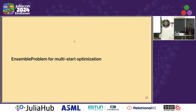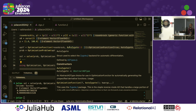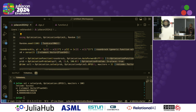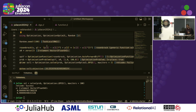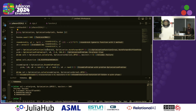We have also added support for ensemble problems. If you are a SciML user, you know ensemble problem is this way of being able to run copies of the same problem using different initializations. For optimization, it would be different initial points. This can be pretty effective in a low-dimensional setting using a multi-start optimization technique.